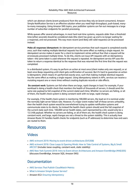Make all responses idempotent: An idempotent service promises that each request is completed exactly once, such that making multiple identical requests has the same effect as making a single request. An idempotent service makes it easier for a client to implement retries without fear that a request will be erroneously processed multiple times. To do this, clients can issue API requests with an idempotency token; the same token is used whenever the request is repeated. An idempotent service API uses the token to return a response identical to the response that was returned the first time that the request was completed. Using idempotency tokens in APIs, services can receive a mutating request one or more times without creating duplicate records or side effects.